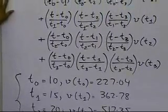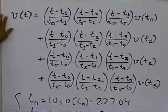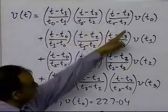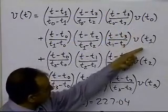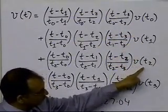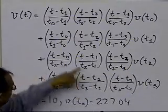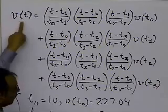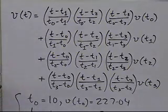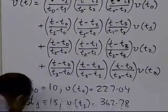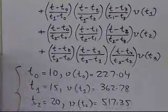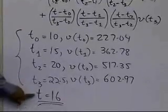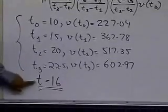So that's what you're going to do, and you can see that everything is in this formula. If you look at this formula, everything we've written down — t0, t1, t2, t3, the velocities at each of those times — is present. The only thing not specified yet is t, because it is the Lagrangian polynomial as a function of time. Since we are interested in finding the value of the velocity at t equal to 16, we are going to substitute t equal to 16.